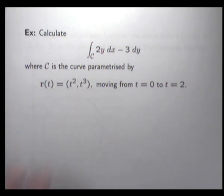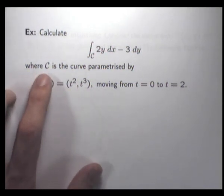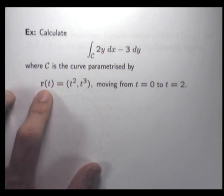In particular, our curve C is parameterised by this vector function here, moving from t equals 0 to t equals 2. So the direction is specified here, the forward direction.